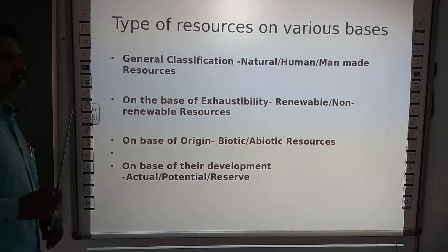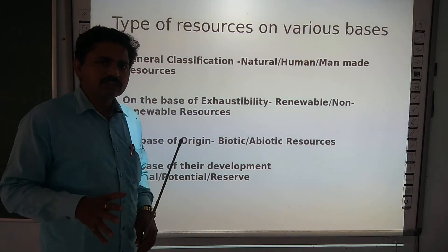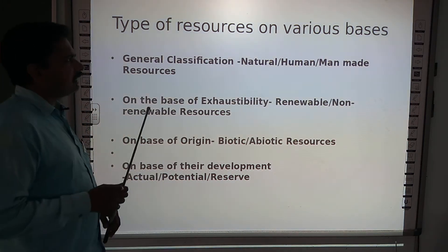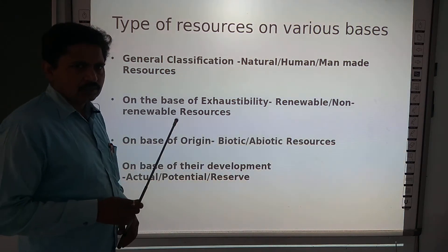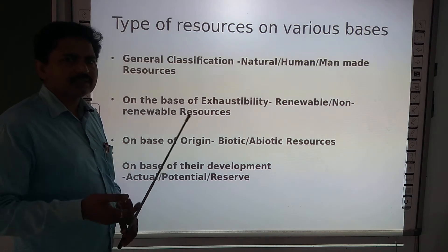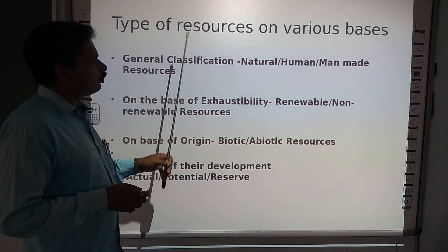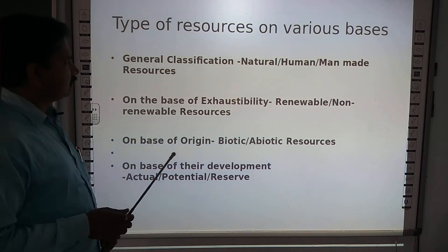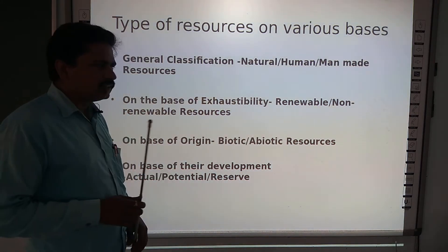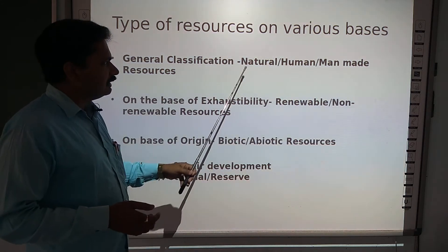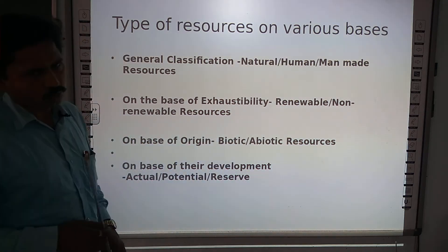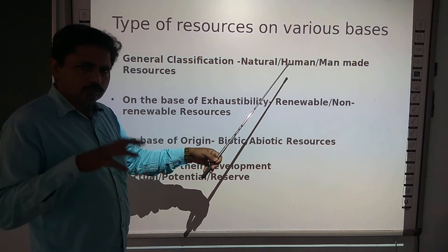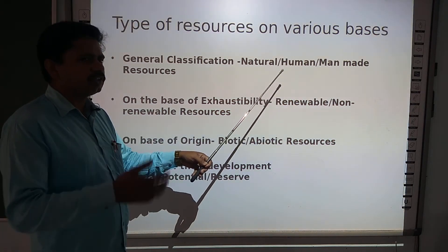Next is the types of resources on their basis. If we want to study a thing completely, it becomes essential for us to classify it. The same applies to resources. For classification, it becomes essential to trace out a basis. If we talk about resources, there are various bases on which we classify them. Among them, the very first is general classification — in general classification, we classify resources into natural, human, and human-made resources. Natural resources are those found in nature.